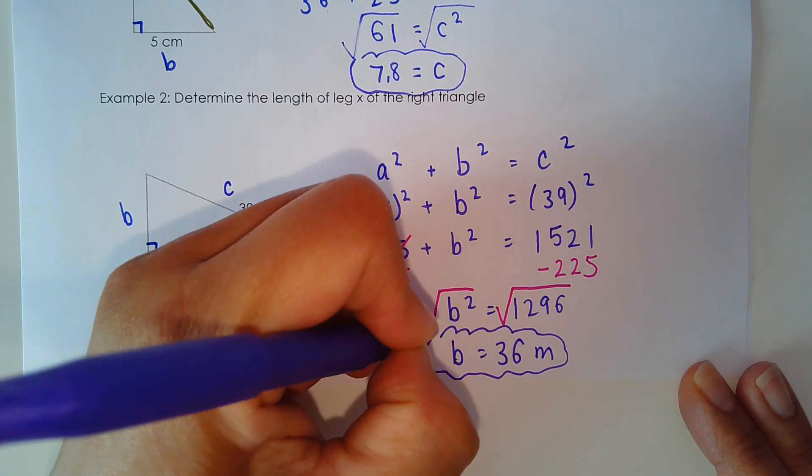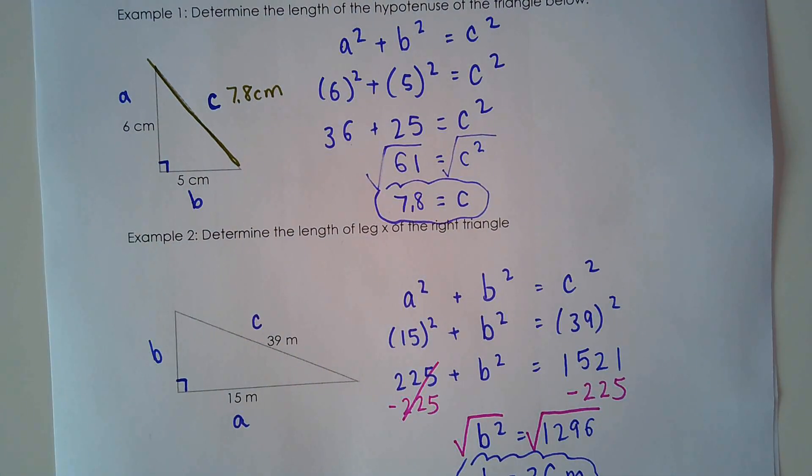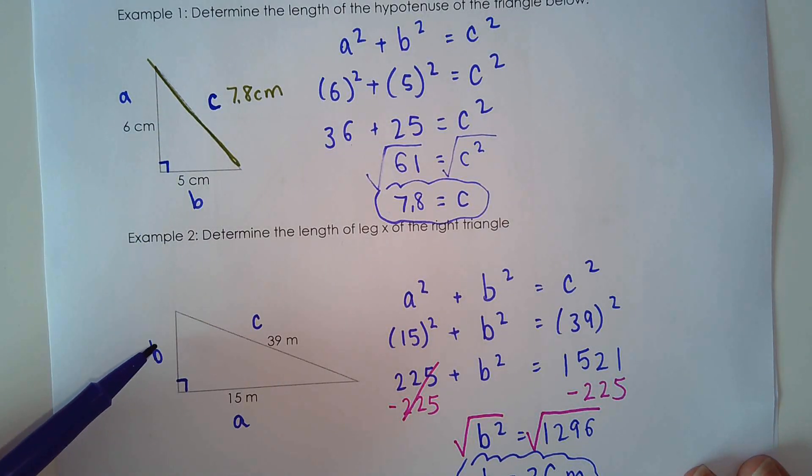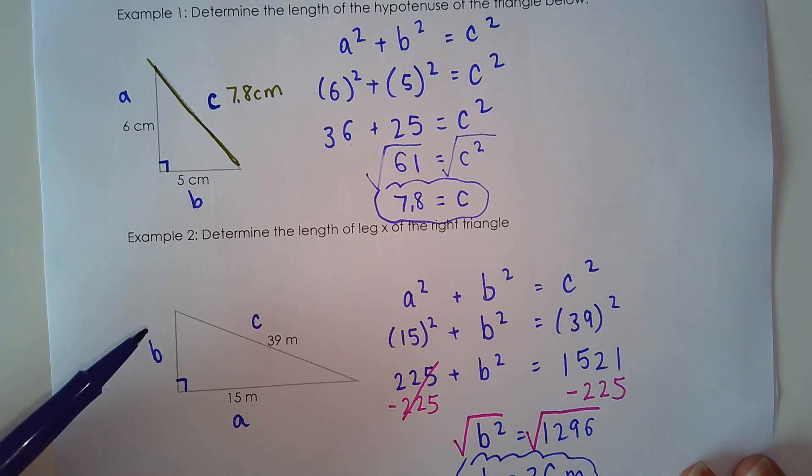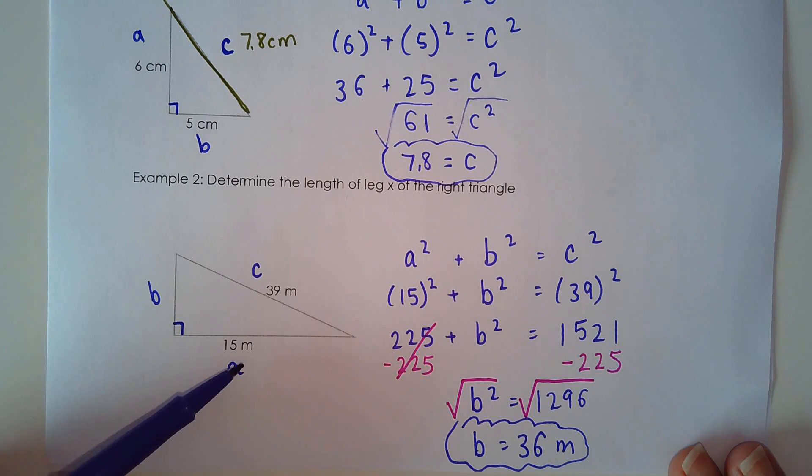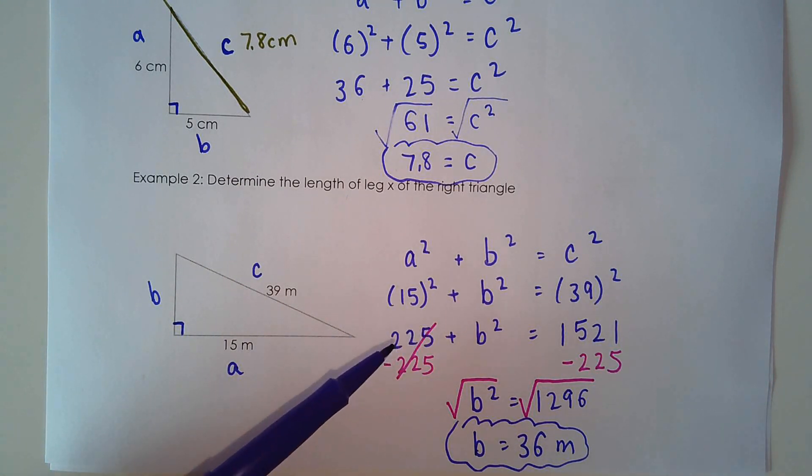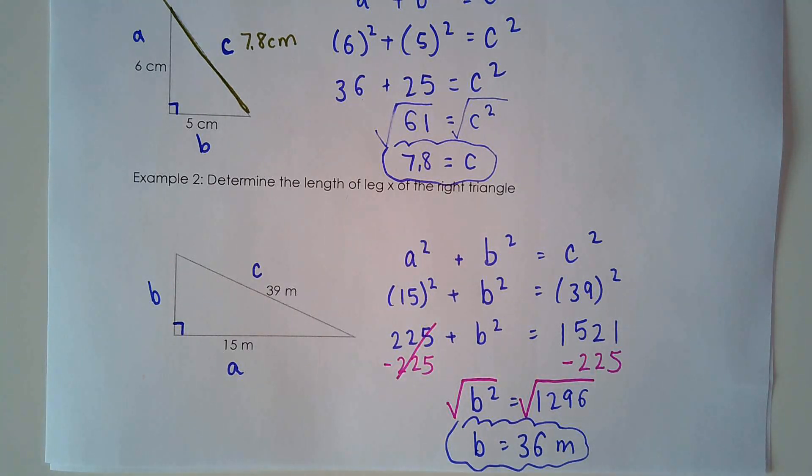Okay, so the trick here is to know if you're solving for side C or if you're solving for one of the legs. When you're solving for one of the legs, you have to use subtraction. So on the second page, I've got four examples. I'd like you to pause the video and try them on your own. And then go through the answers with me.